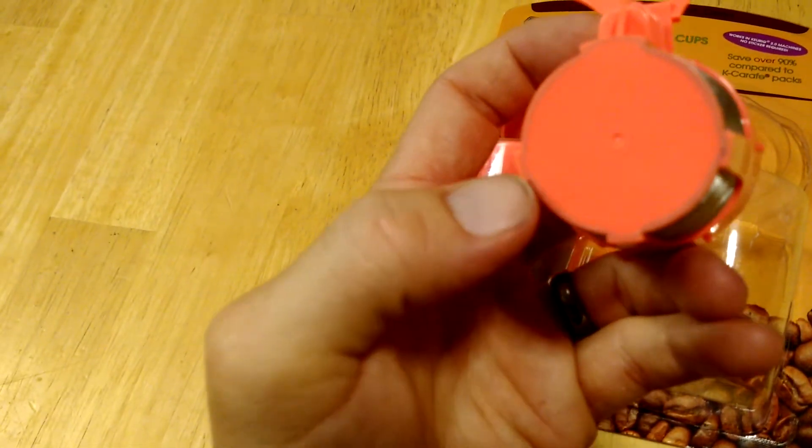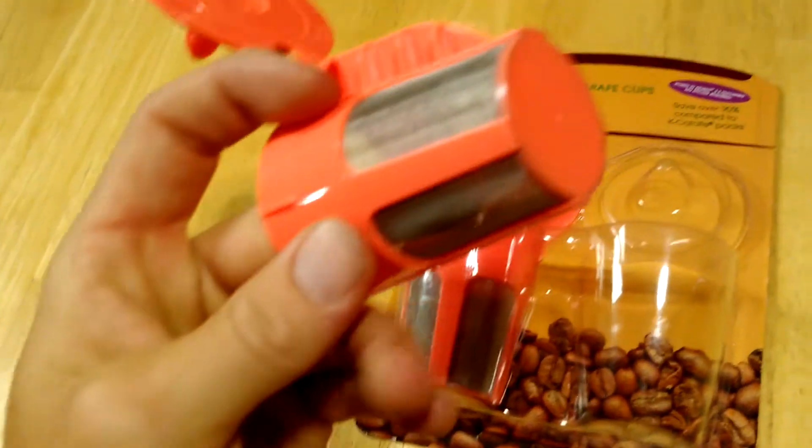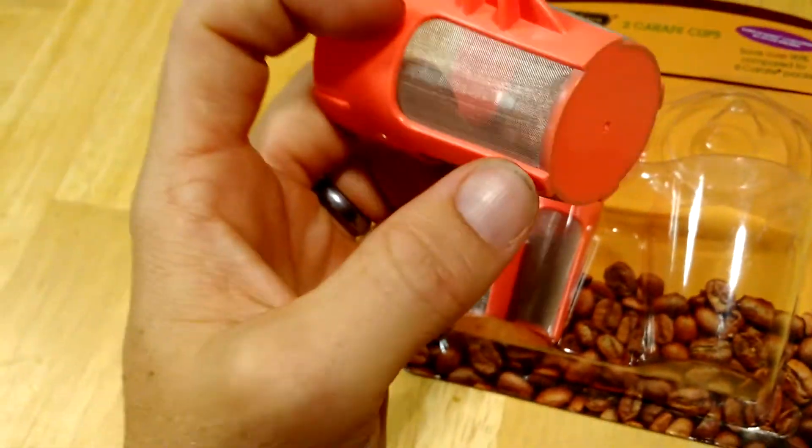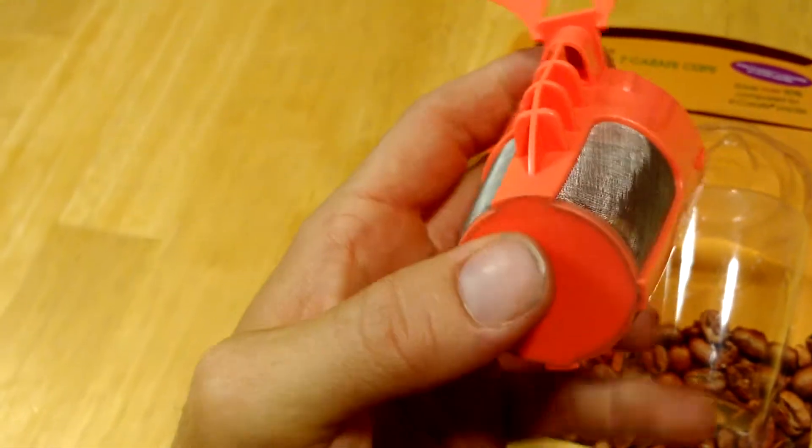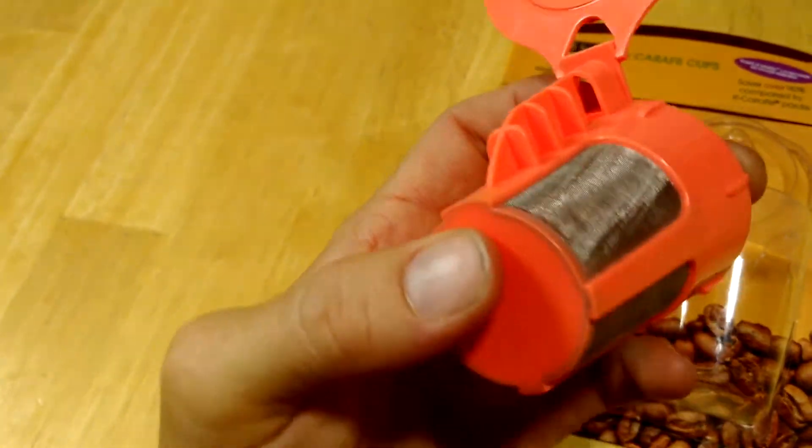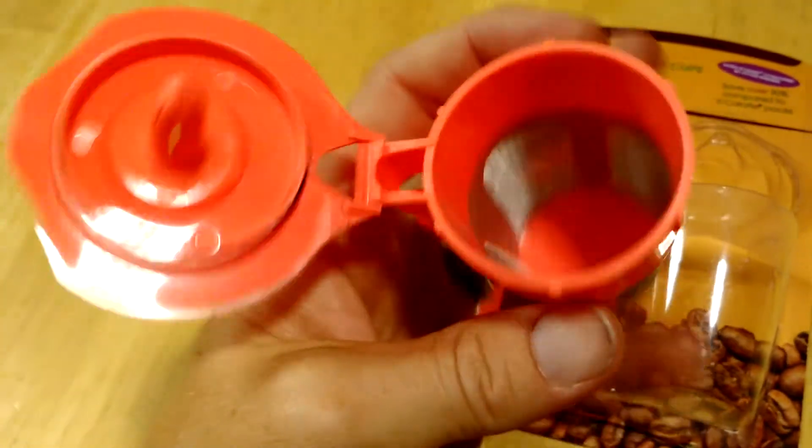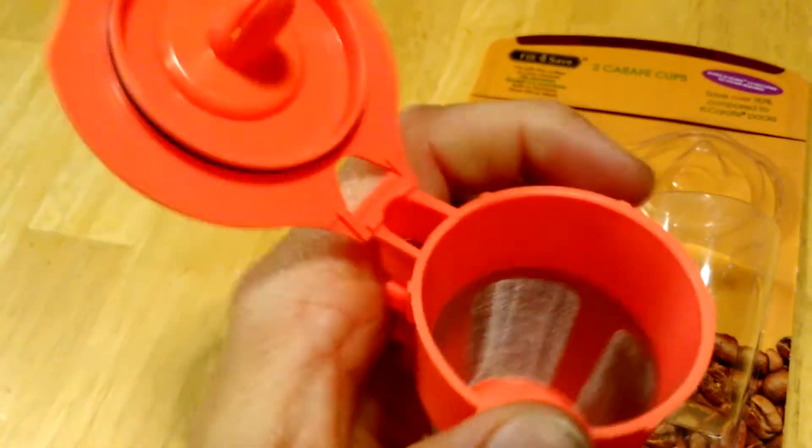You can see this gray line around here. That's actually where the plastic has been molded into the filter. So that filter is not going to go anywhere. You're not going to have any leaks around the filter like some other coffee cups could.